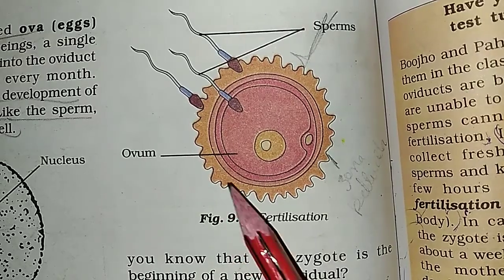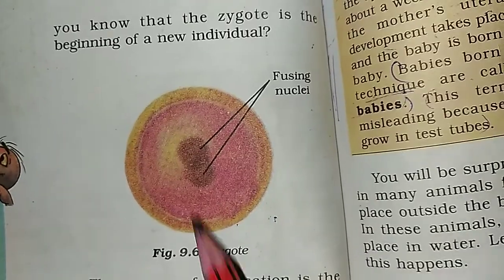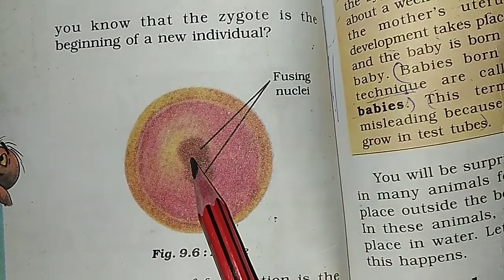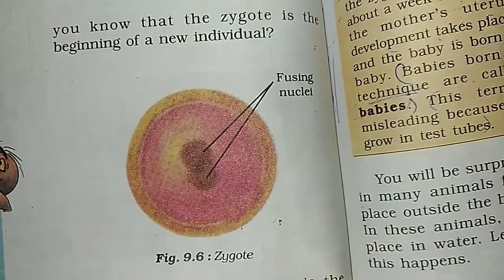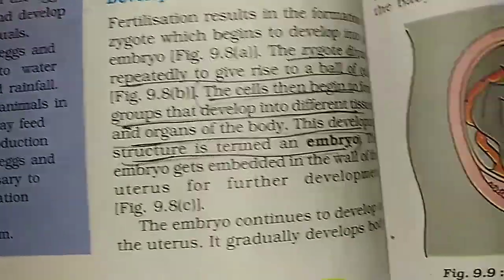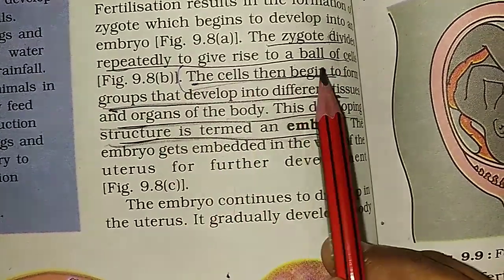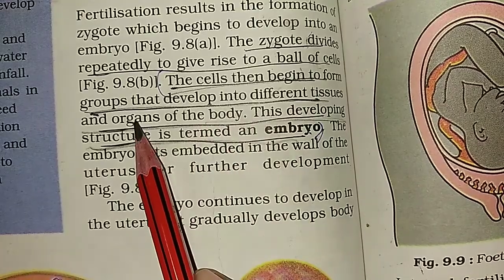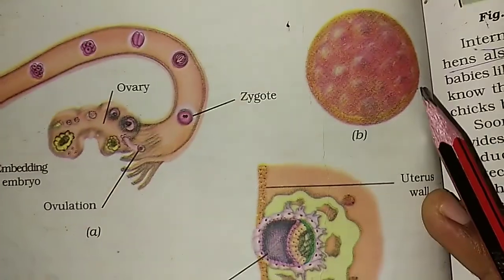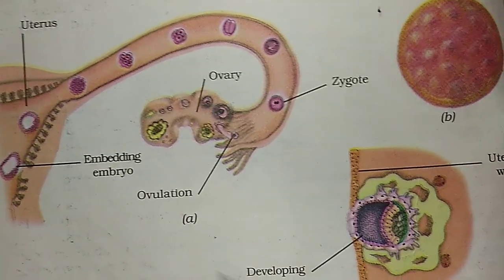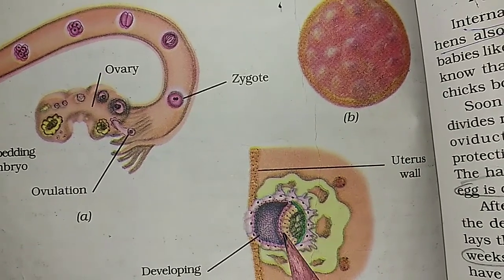In this image, we show the fertilization process. This is the ovum and these are the sperm. Here we show the zygote, when the nuclei fuse — this is the zygote image when the ovum and sperm are fused. The zygote divides repeatedly to give rise to a ball of cells, which then begin to form groups that develop into different tissues and organs of the body. This developing structure is called the embryo.